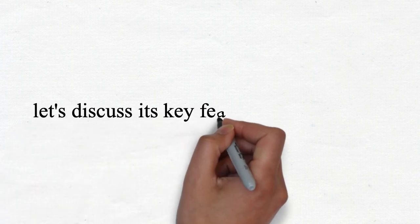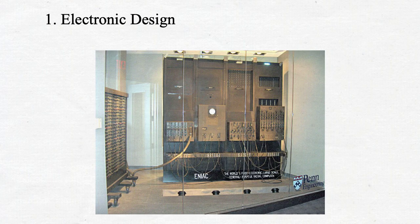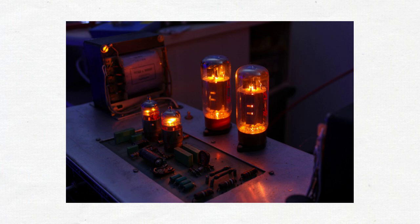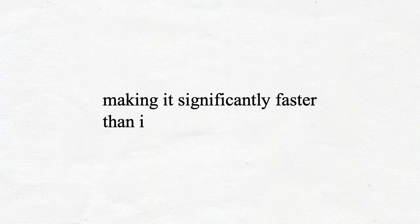Now let's discuss its key features. Number 1 is Electronic Design. ENIAC was the first electronic computer using vacuum tubes instead of electromechanical switches, making it significantly faster than its predecessors.